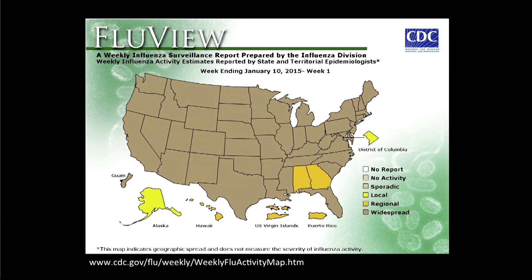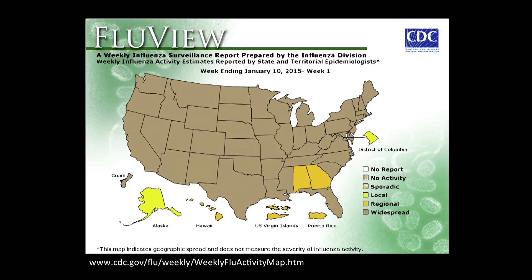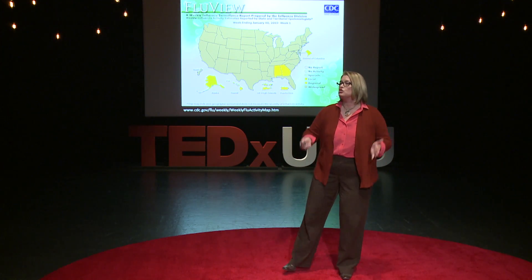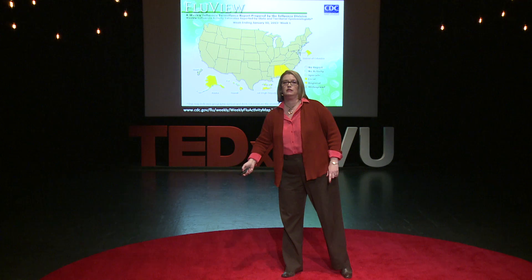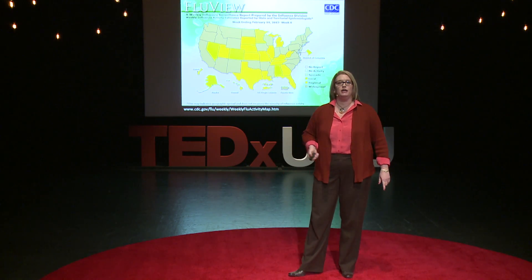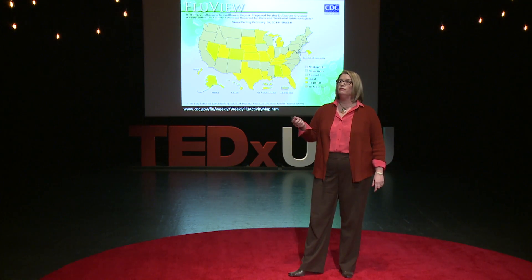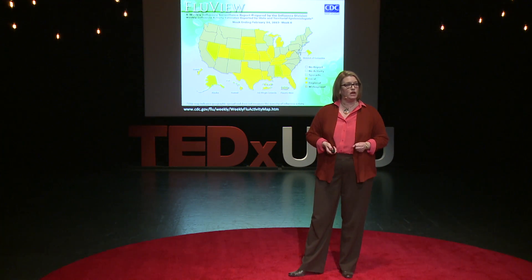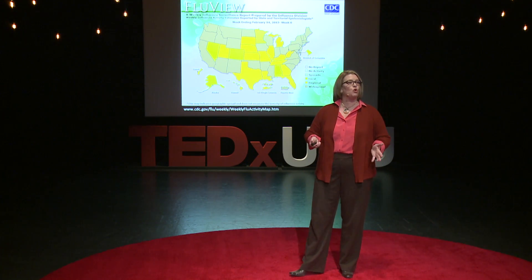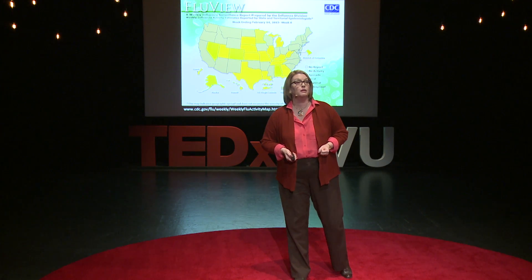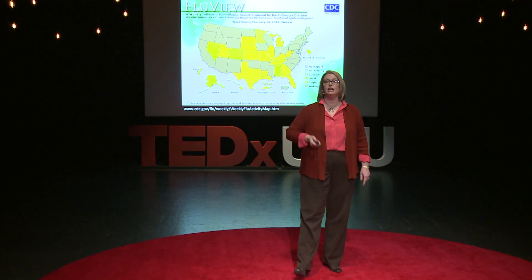This map is from the CDC — the Centers for Disease Control and Prevention — and it shows widespread flu activity ending January 10, 2015. By the dark brown color, you can see there's lots of widespread flu activity. Maps are also effective because we can analyze trends over time. Let's look a month ahead — now we're into February. You can start seeing that in the Midwest we're seeing more localized flu activity, but it's still present on the west coast and east coast.